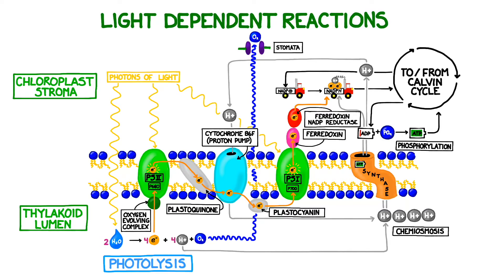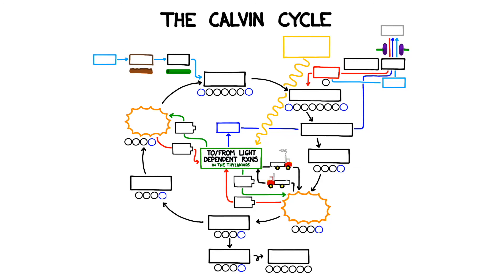To recap, so far we've harnessed photons of light and used it to break up molecules of water, stimulate photosystems, we loaded up molecules of NADPH, recharged ATP, and created oxygen as a waste product. And this brings us to the second phase of photosynthesis, the light independent reactions, also known as the Calvin cycle.